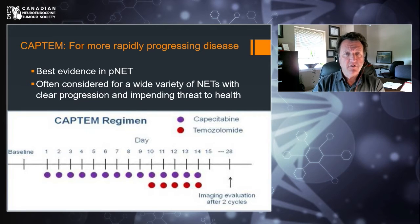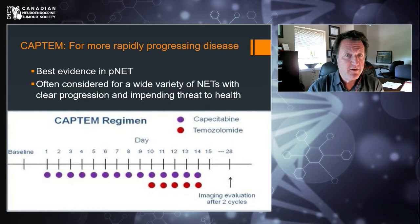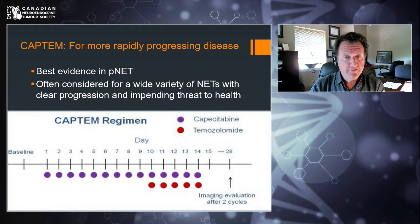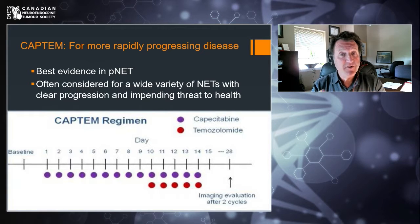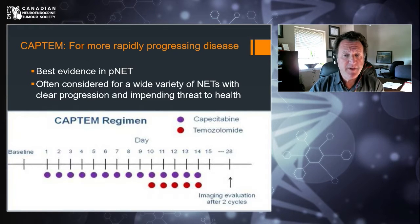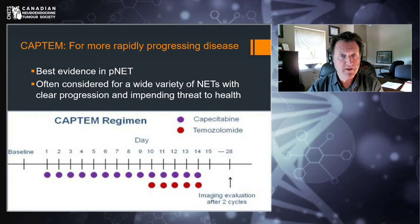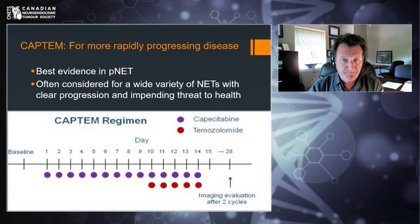Turning to chemotherapy — most of us have an image of what chemotherapy is, but thankfully for neuroendocrine tumors that really isn't the case. That's due to a treatment called CAPTEM, which is becoming increasingly the first-line chemotherapy we turn to when a patient needs chemo. The best evidence is for neuroendocrine tumors originating from the pancreas, but it's often considered for a wide variety of patients if disease is clearly progressing, especially if there's an impending threat to health. CAPTEM involves two medicines — capecitabine given every day for 14 days, usually two or three pills twice a day, and temozolomide for the last five days.